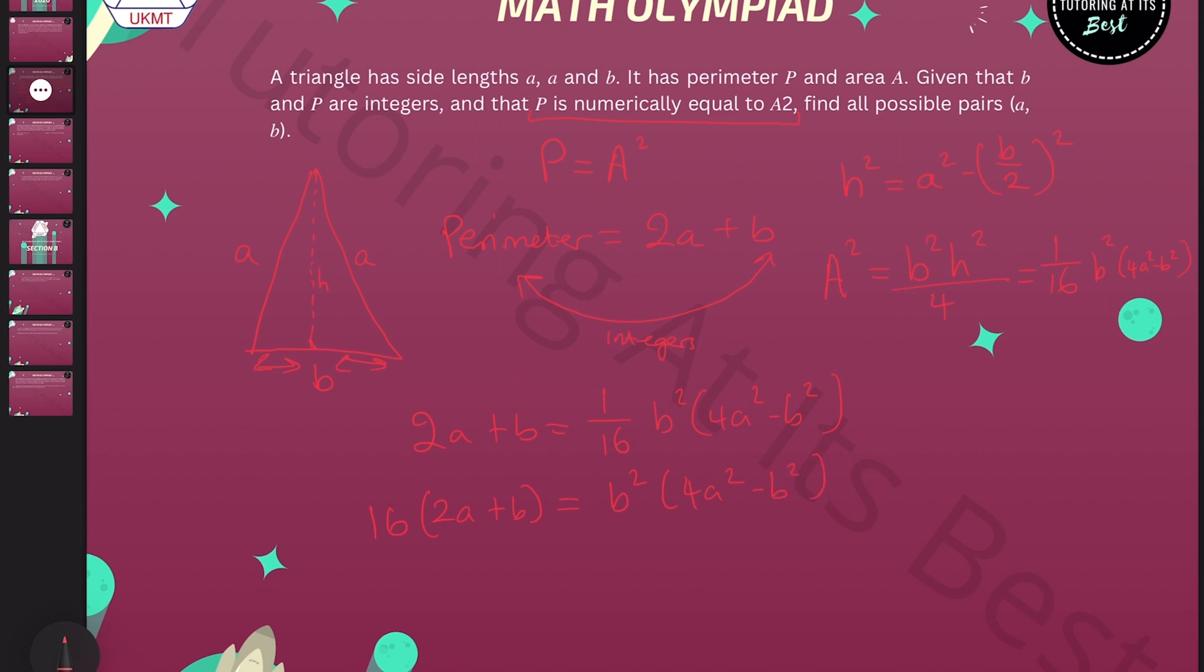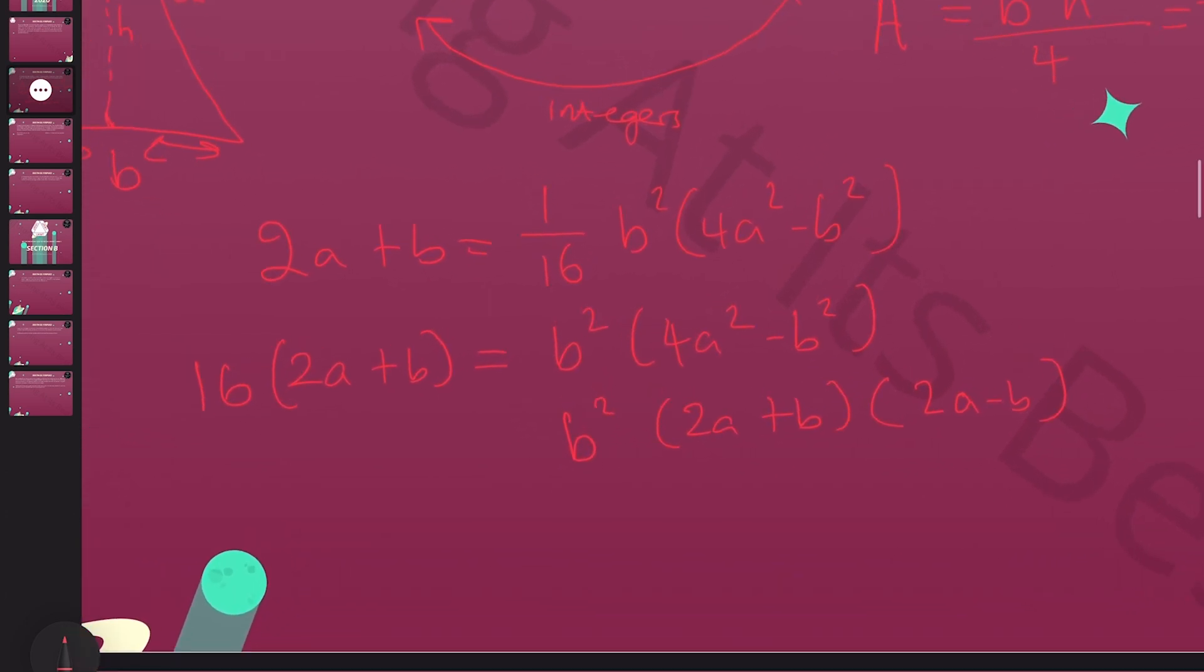We can factorise it out as well, which gives us B², (2A plus B), and (2A minus B). We know for sure that 2A plus B does not equal zero, which means we can simply divide by that. We're left with 16, which equals B² and (2A minus B).